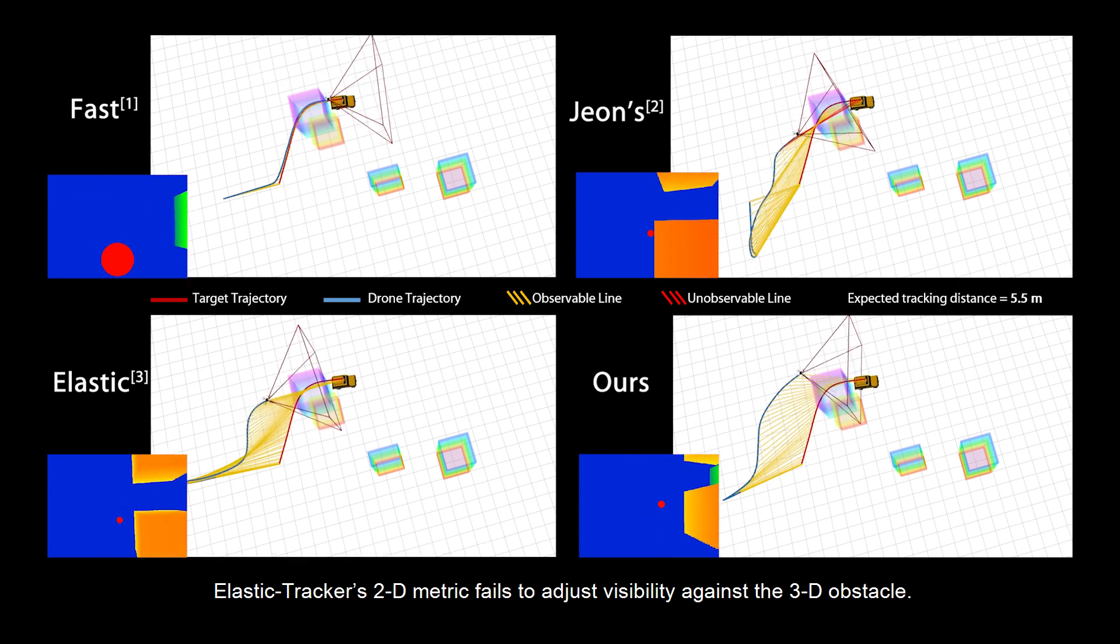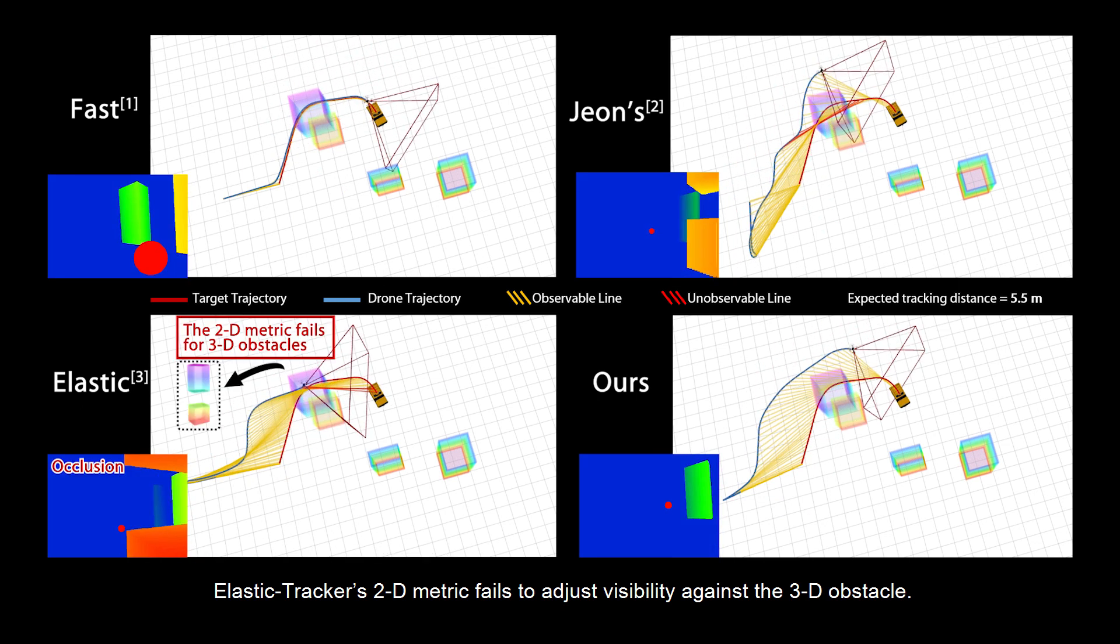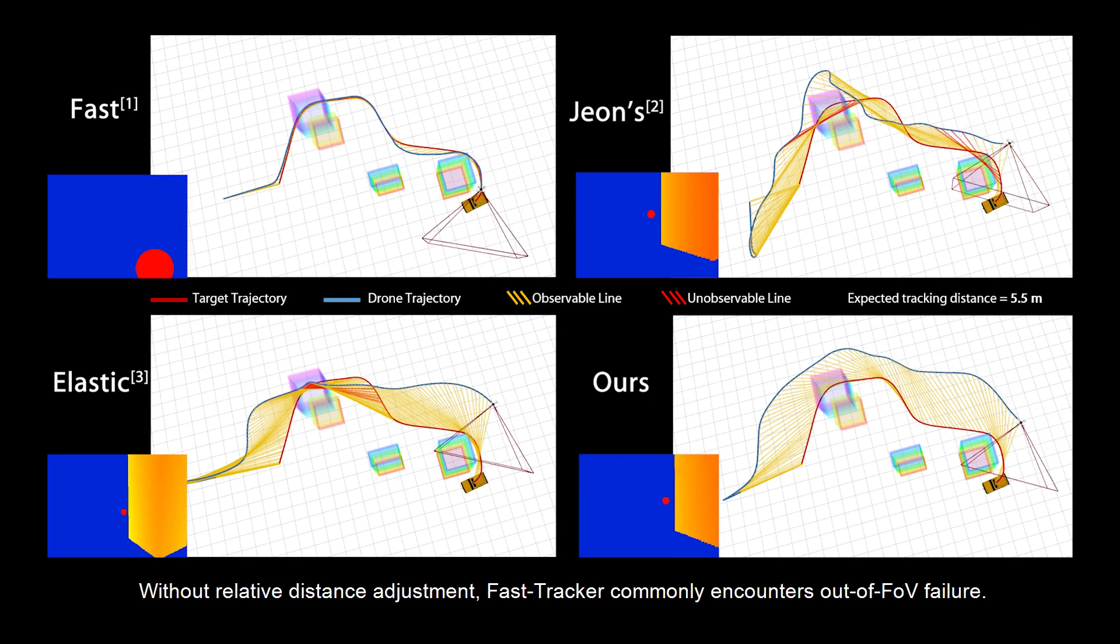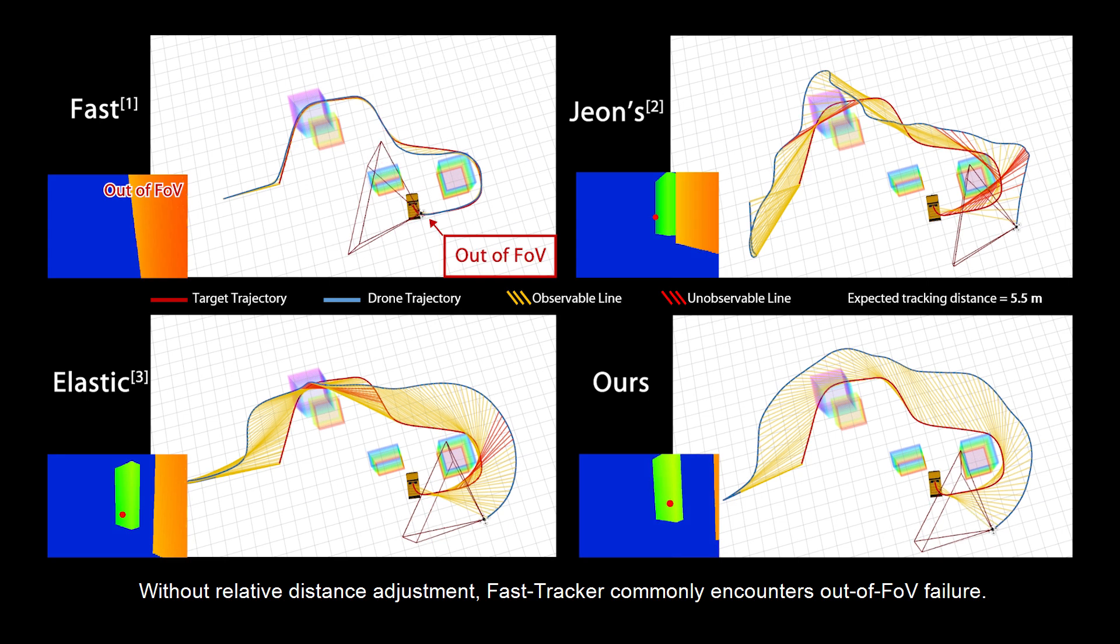Elastic Tracker's 2D metric fails to adjust visibility against the 3D obstacle. Without relative distance adjustment, Fast Tracker commonly encounters out-of-FOV failure.